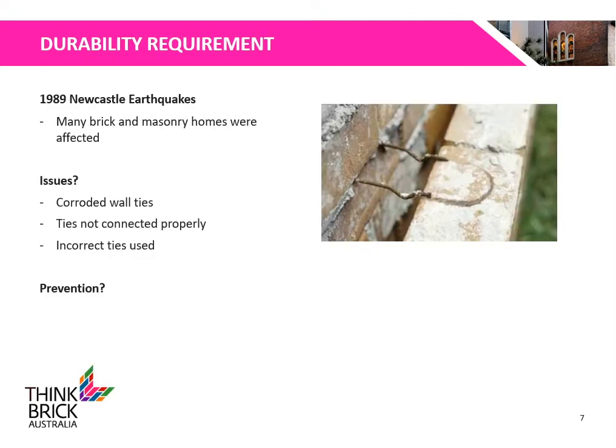The 1989 Newcastle earthquake affected many brick and masonry homes, causing the outer walls to separate from their inner structure due to seismic activity. Subsequent investigation found that the durability of the wall ties was not correctly considered during design and failed due to corrosion. Thus, we must consider the durability of the wall ties.